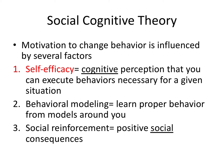Behavioral modeling means that you learn proper behavior from role models in the society around you. And finally, social reinforcement comes into play when that behavior yields positive social consequences. So this theory is a combination of cognitive factors that are internal and the social environment, which is external — hence the name social cognitive theory.